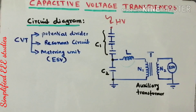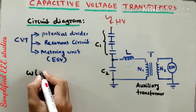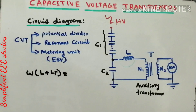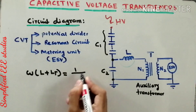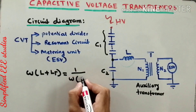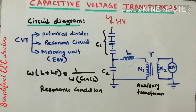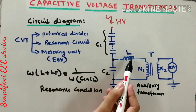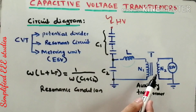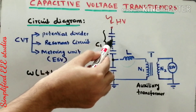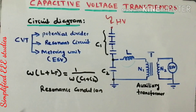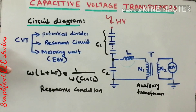In order to maintain the resonance condition, you need to follow this equation: ω(L + Lt) = 1 / [ω(C1 + C2)]. Here ω is the angular frequency expressed in radians per second, L is the value of the inductor in Henry, Lt is the inductance of the auxiliary transformer, and C1 and C2 are the values of the high voltage and low voltage capacitances respectively. While designing the CVT, you must ensure that the circuit follows the resonance condition.